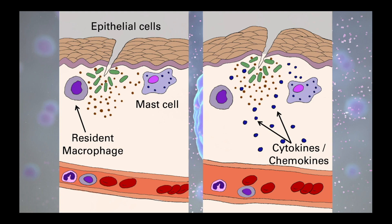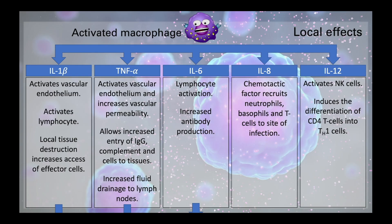Interleukin-1-beta, tumor necrosis factor alpha, interleukin-6, interleukin-8, and interleukin-12 all have significant roles in shaping the immune response, but have quite distinctive outcomes. Interleukin-1-beta and TNF-alpha, for example, are both able to activate the vascular endothelium, which allows neutrophils and other soluble plasma components of the immune response to migrate from the blood to the tissue more easily.